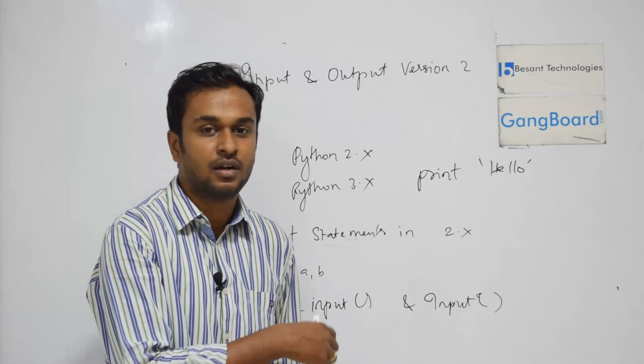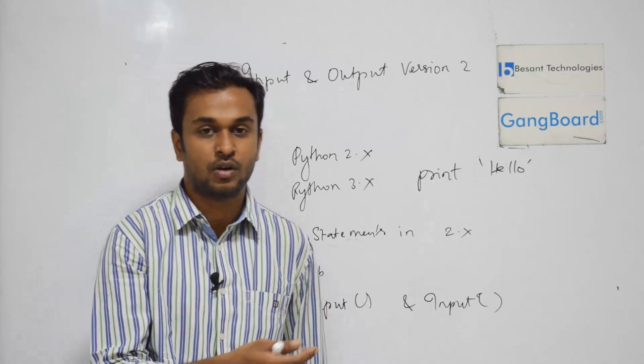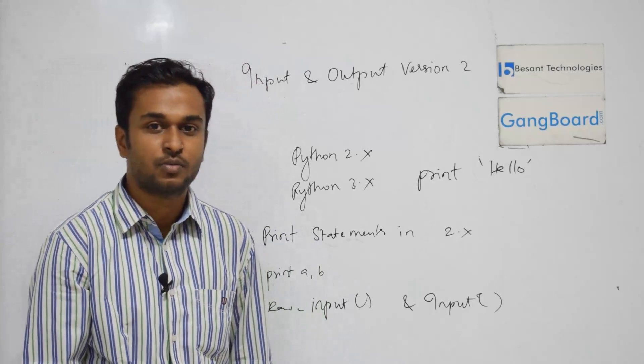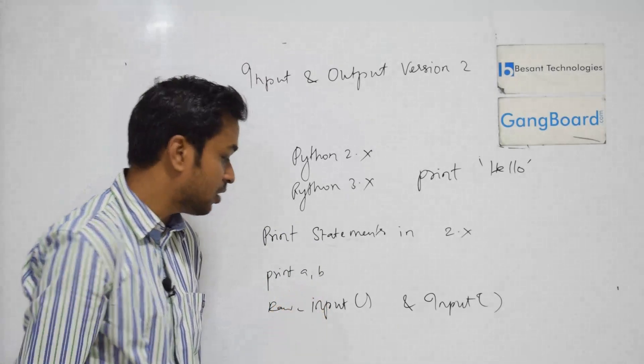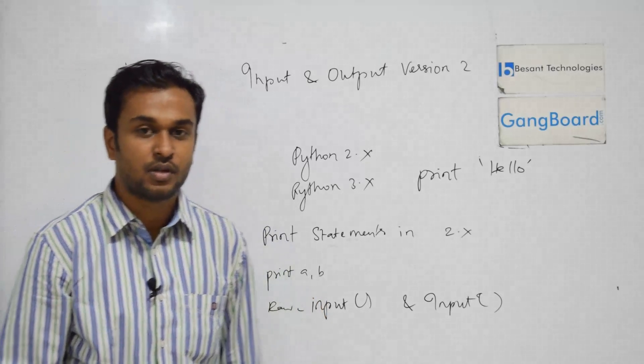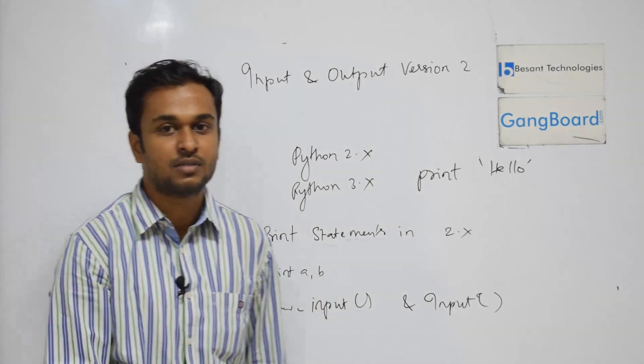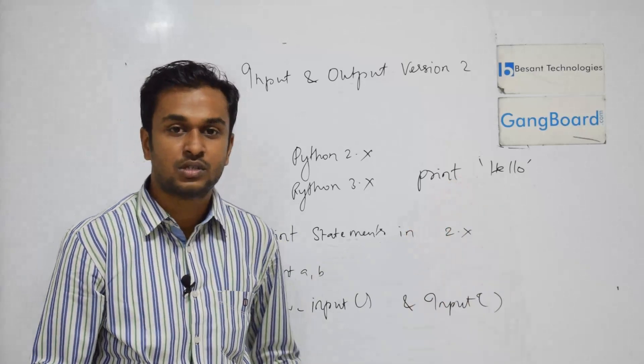When we're doing a, b, we have some values. The input and the output. Print statements without brackets - Python 2 version is the output.